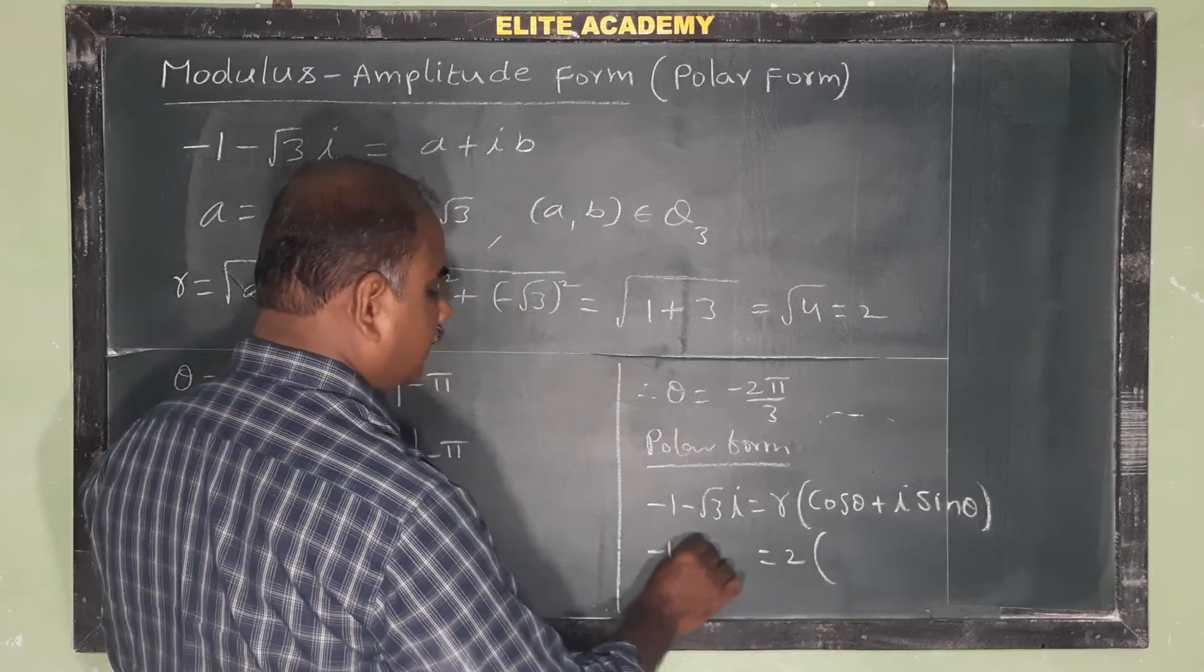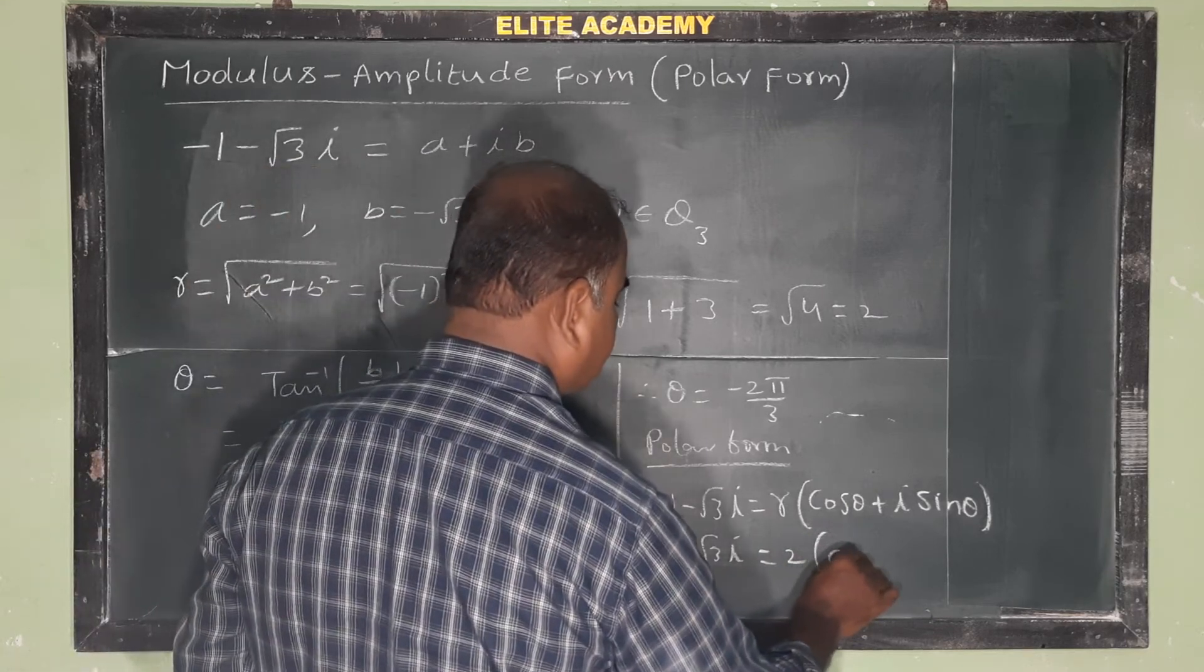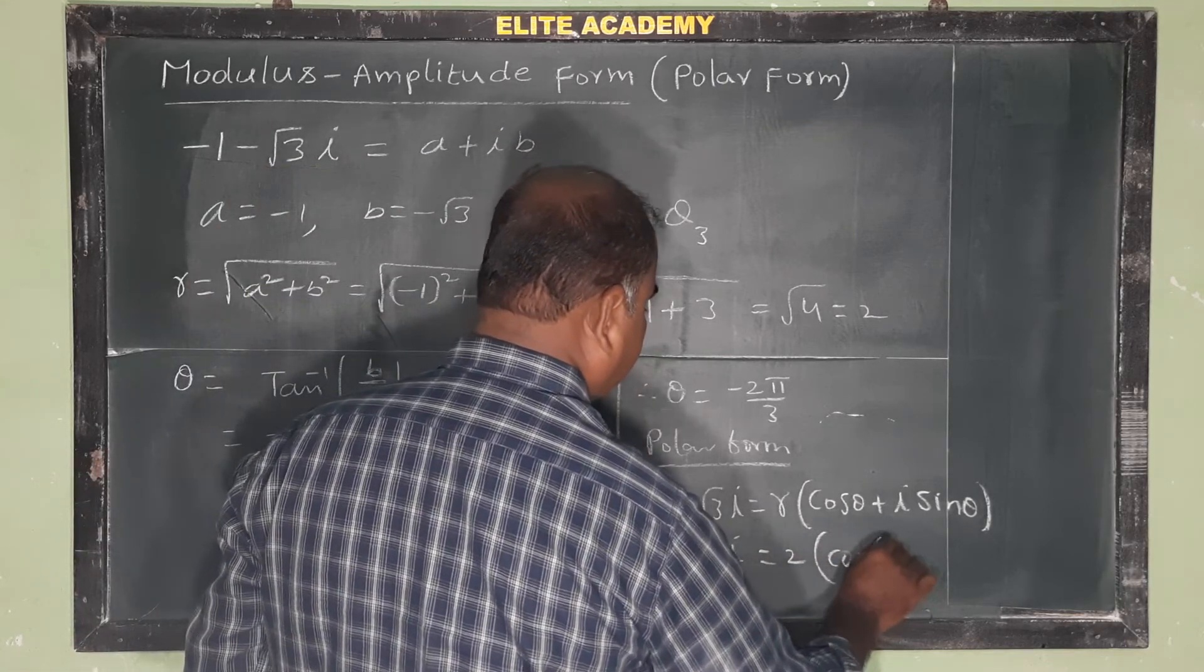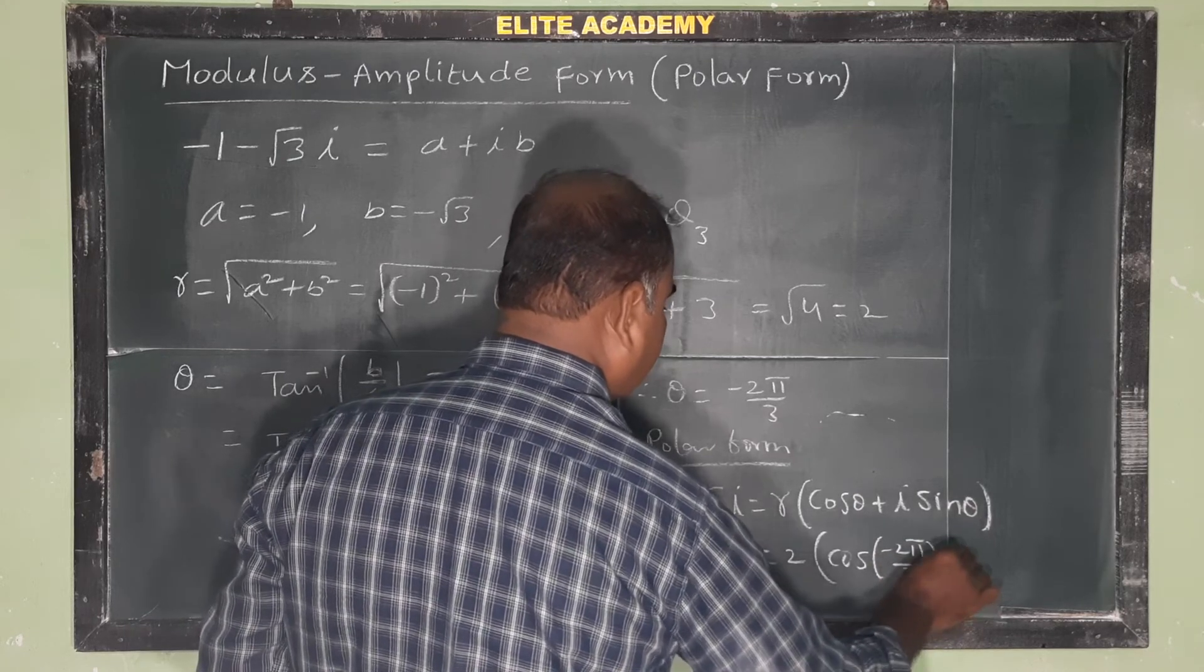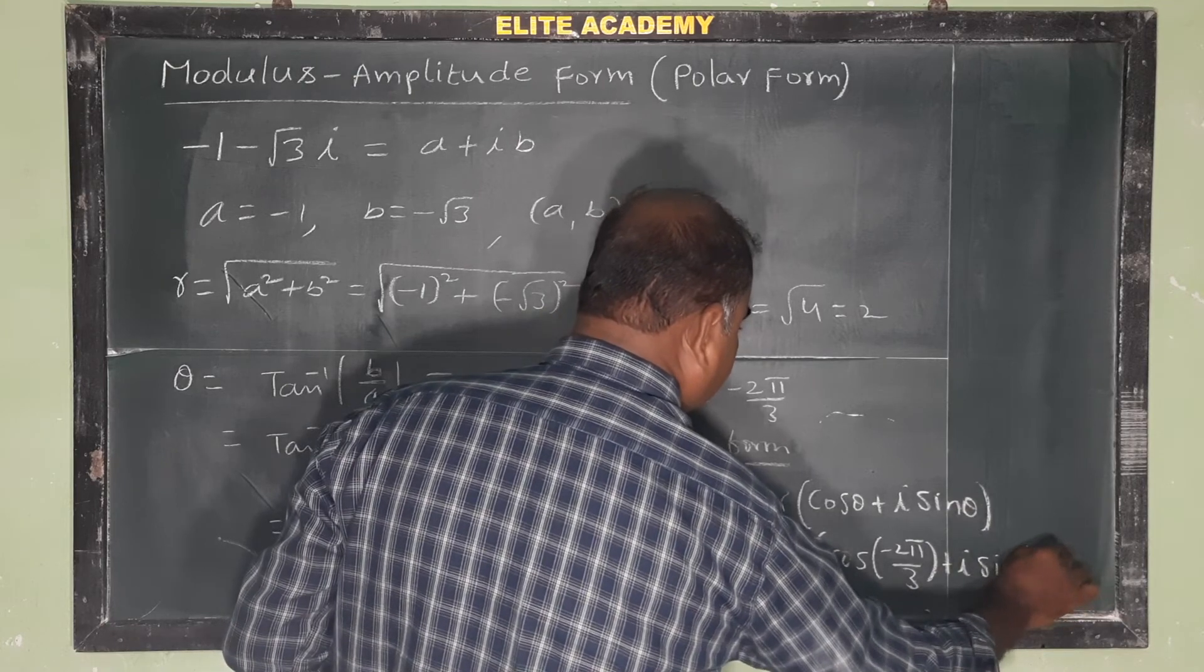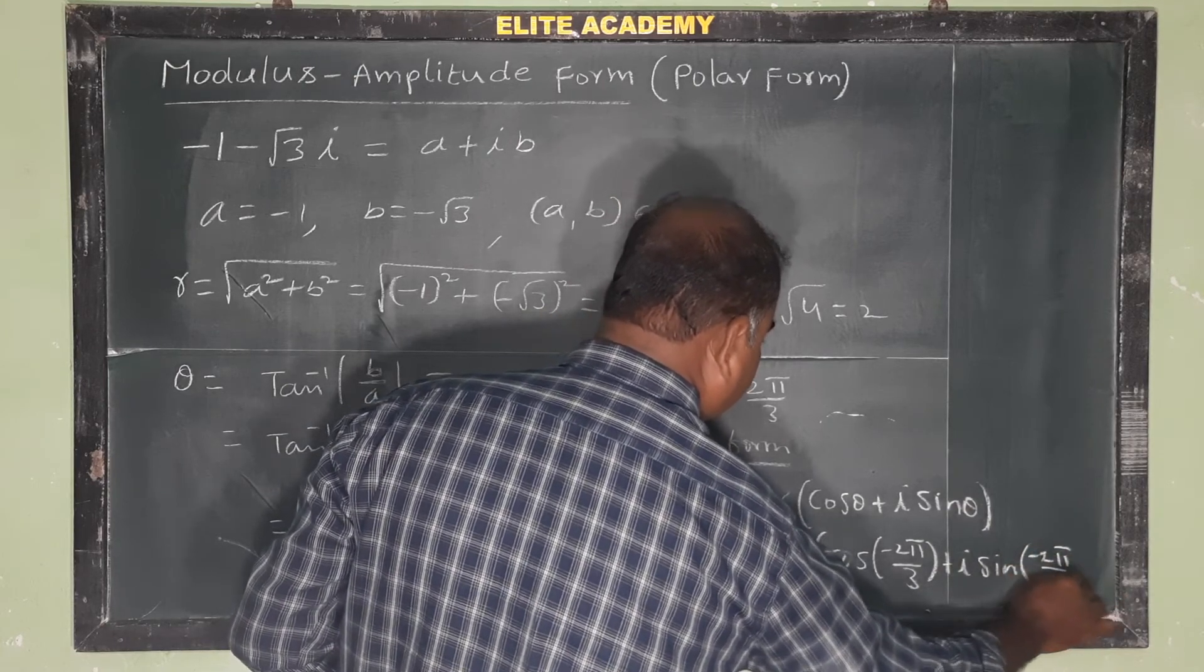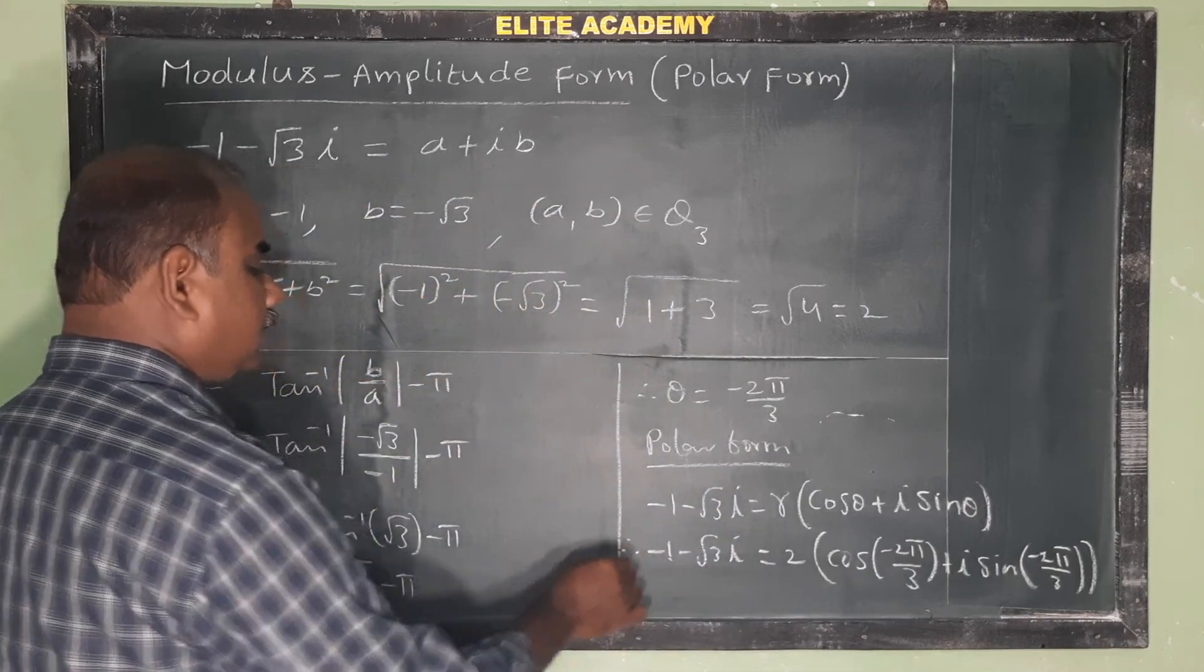-1 - √3i = 2[cos(-2π/3) + i sin(-2π/3)]. This is the polar form. Write it down.